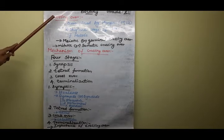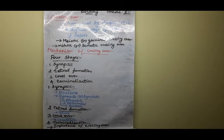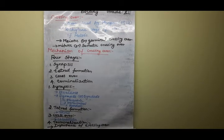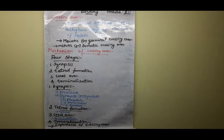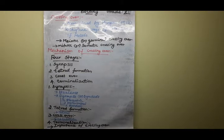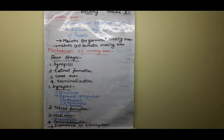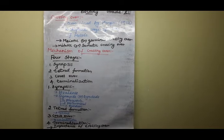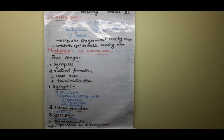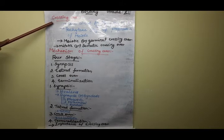What do you mean by crossing over? This is a biological process. They produce a new combination of genes. How? By interchanging the segments between the non-sister chromatids of the homologous chromosomes. This interchanging process is called crossing over.